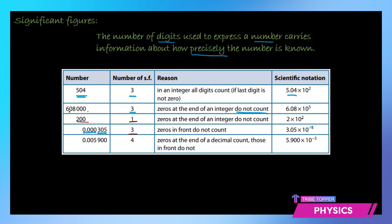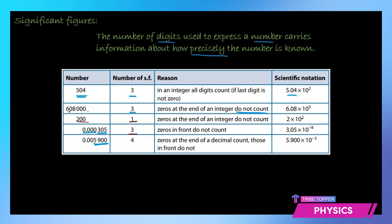But if after the decimal you have some non-zero number and there are some zeros after that, trailing zeros after the decimal will be counted. So if it is 0.005900 this has four significant figures. The first three zeros are not significant but 5, 9 and 00 are significant. And how do you write it in scientific notation? Put it as 5.900. You have shifted by three digits to the right, so it will be 10 to the power of negative 3.